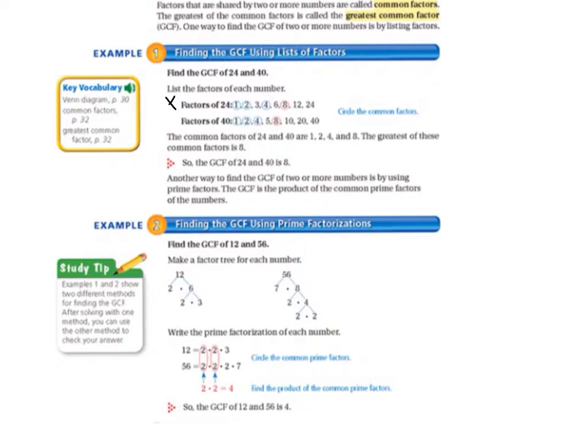We find the factors of 24 are 1, 2, 3, 4, 6, 8, 12, and 24. And the factors of 40 are 1, 2, 4, 5, 8, 10, 20, and 40.